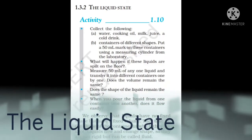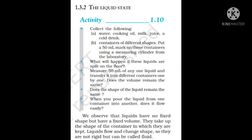Now, the liquid state. Let us understand this by another activity from your textbook, page number four, activity 1.10. Collect the following: water, cooking oil, milk, juice, and containers of different shapes. Put a 50 ml mark on these containers using a measuring cylinder from the laboratory. What happens if these liquids are spilt on the floor? They will spread easily. Measure 50 ml of any one liquid and transfer it into different containers one by one. Does the volume remain the same? Yes, obviously the volume will remain the same for liquids.